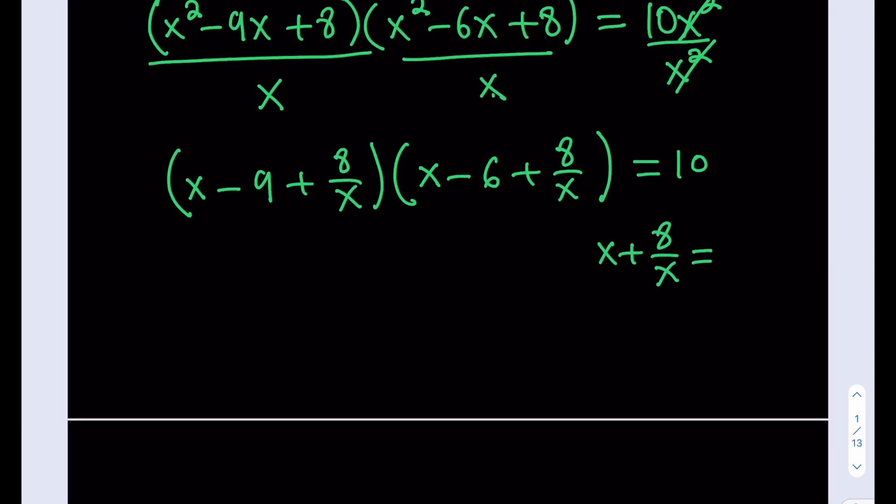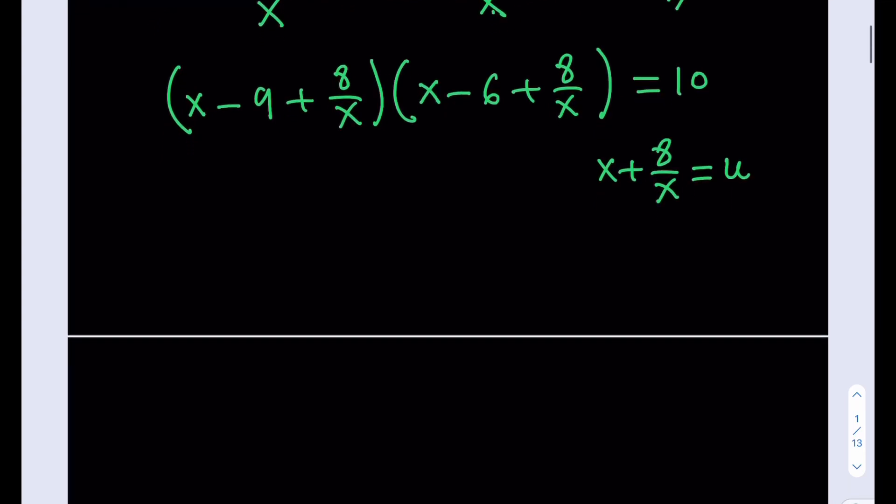So I'm just going to call x plus 8 over x another variable, let's call that u. Because I love the u substitution. After doing that, we're going to be getting u minus 9, multiply by u minus 6, and that's going to equal 10.